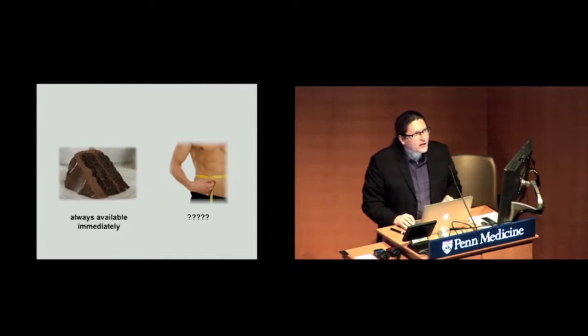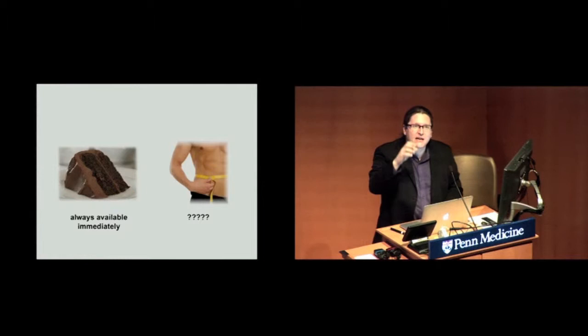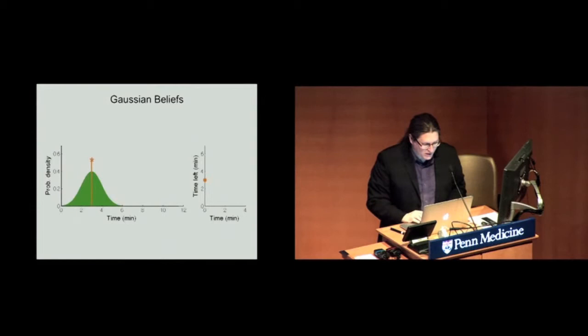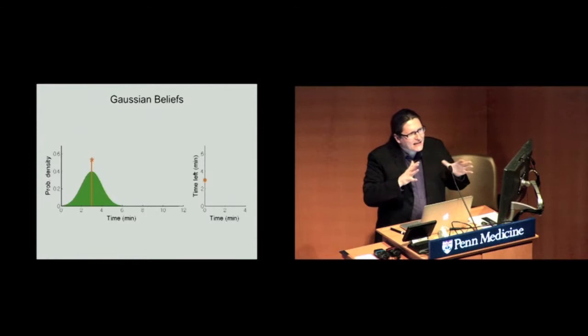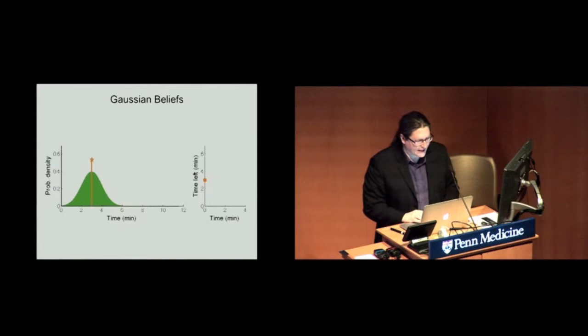So what should you do when you face this kind of intertemporal choice dilemma? It turns out that what you should do in this dilemma hinges critically on what you believe are the possible times that that reward that you're waiting for might arrive at. Now, to talk you through it, I'm going to show you a couple of movies. So one possibility is that you might believe that the awaited reward is going to occur at a very specific point in time, and maybe you're a little bit off. So maybe, you know, maybe it's likely to come at that time, but it could come a little bit earlier, a little bit later. Another way of saying that is that you have a Gaussian belief about the time at which that delayed reward is going to occur.